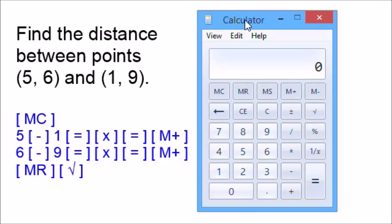Find the distance between points five, six, and one, nine. Five, six will be point two, and we'll designate one, nine as point one. So start off by clearing the memory. Then we go five minus one equals, to square the four times equals, added to memory, memory plus.